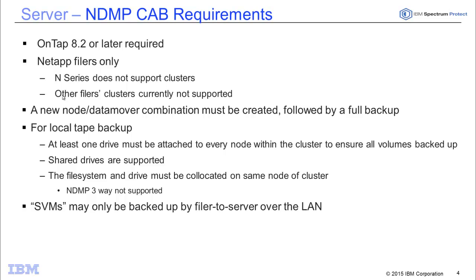We can backup directly to locally attached tape, but you have to have at least one drive attached to every node within the cluster to ensure all volumes are backed up. NDMP three-way support is not included, so file systems and drives must be co-located on the same node or cluster. The drive can be shared with your Spectrum Protect server. If you are doing a storage virtual machine-based backup, you will need to send the data across the network through the Spectrum Protect server. We do not support direct-to-tape for a storage virtual machine backup that's cluster-aware.